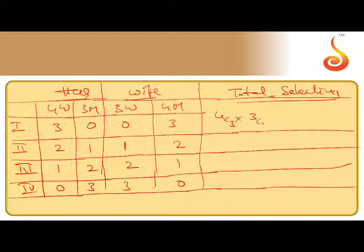4C3 into 3C0 into 3C0 into 4C3, so 4C3 is nothing but 4C1, 4C1 is 4, 3C0 is 1, 1, that is 16 comes in the first case. Now next 3C2 into 3C1 into 3C1 into 4C2.